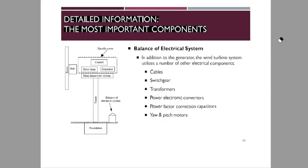The balance of electrical system includes additional electrical components beyond the generator. These include switchgear, transformers, cables, power electronic converters, power factor correction capacitors, and yaw and pitch motors. Without the balance of electrical system, it would not be possible to transport or effectively generate energy, making it an essential part of the wind turbine system.